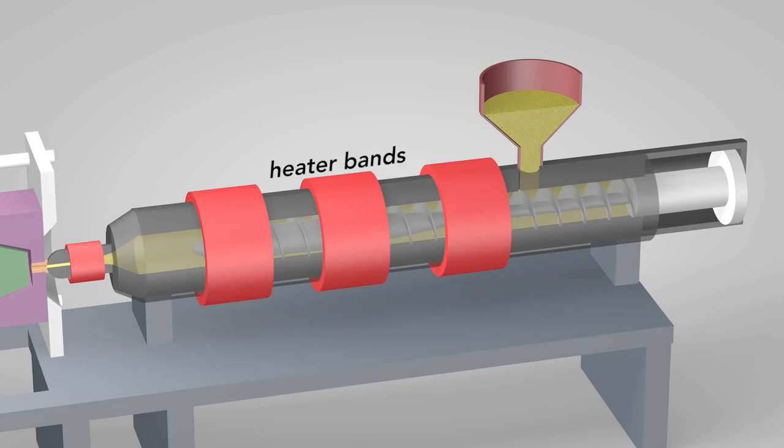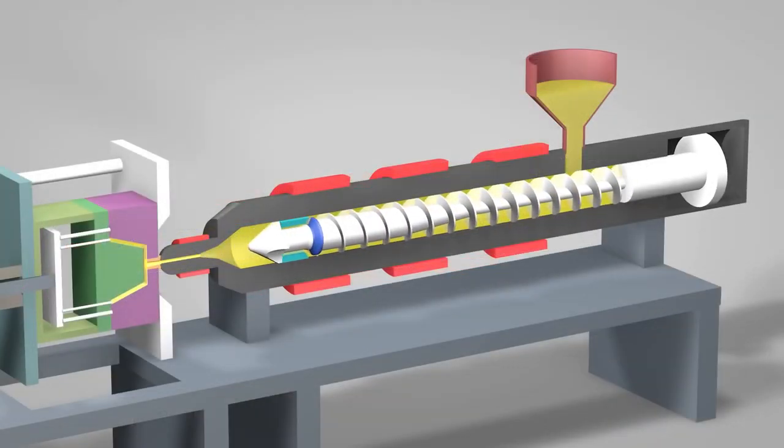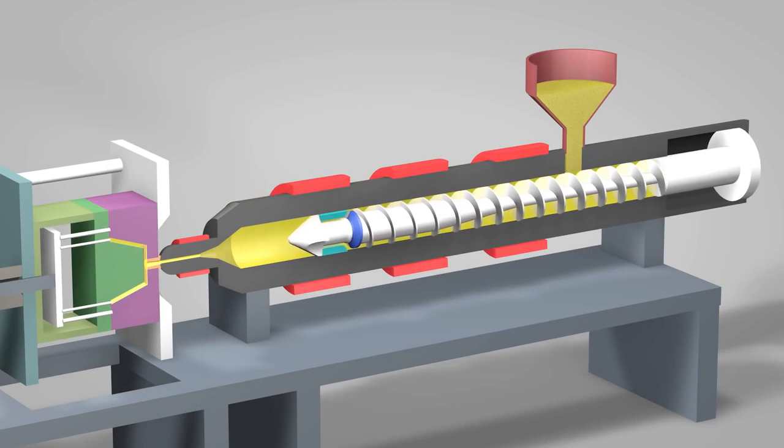Heater bands wrapped around the barrel warm up the plastic pellets. As the pellets are moved forward by the screw, they gradually melt and are entirely molten by the time they reach the front of the barrel.